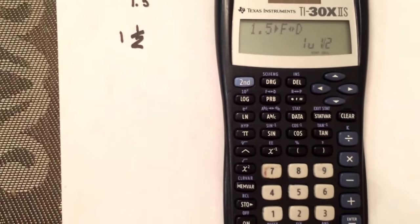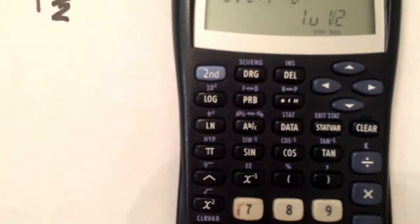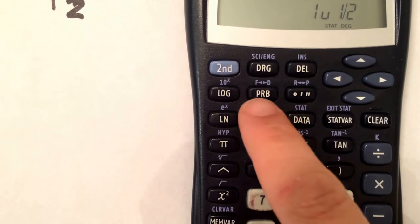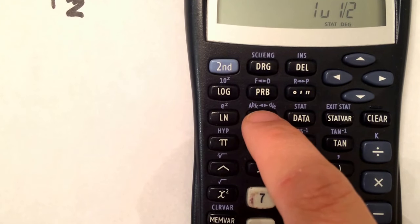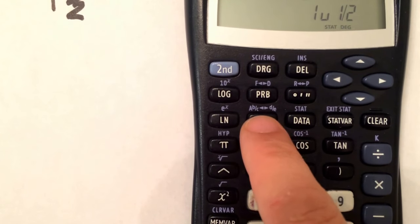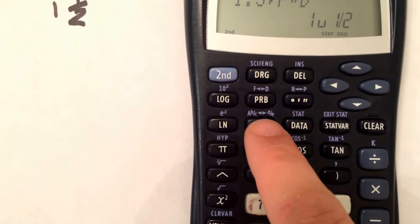That's the mixed fraction. If you want an improper fraction, just go back and you'll see on top of that A B/C button right there, and on top it shows mixed to improper or proper to mixed, so press that again.